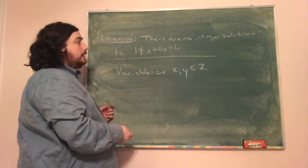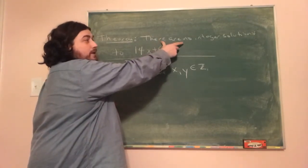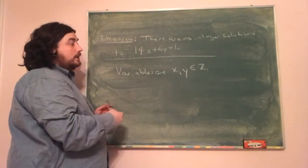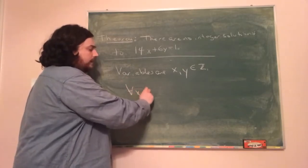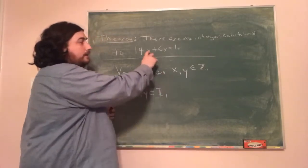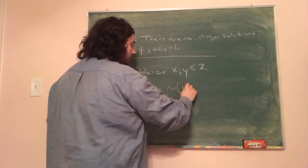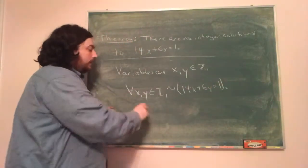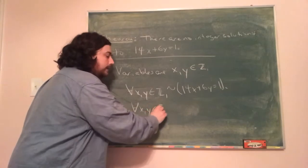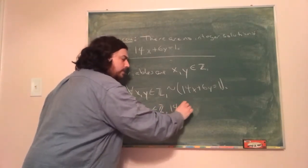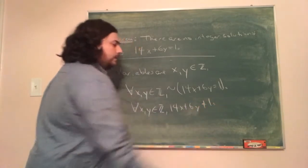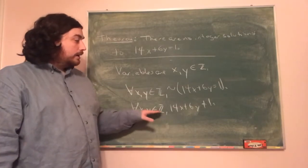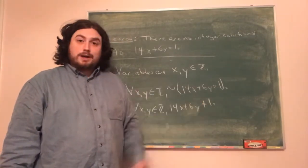There are no integer solutions means there does not exist an integer solution, or for all x and y in Z, we have that 14x plus 6y equals 1 is not true — that is, 14x plus 6y is not equal to 1. So what we're trying to show is that regardless of what x and y are, we will always have that 14x plus 6y cannot be equal to 1.